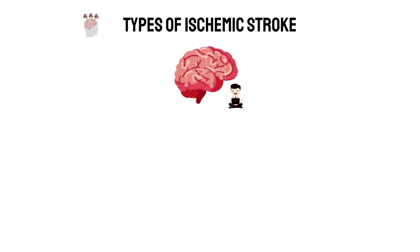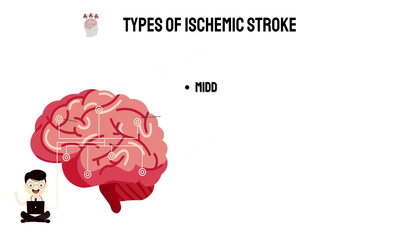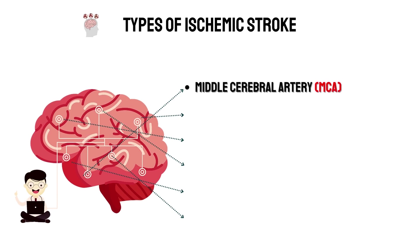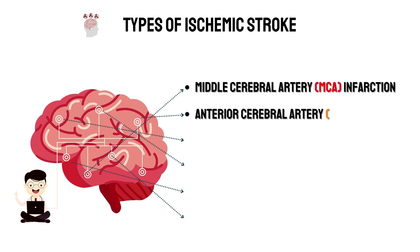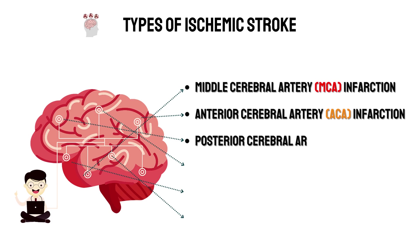By morphology, ischemic stroke is classified into six types: middle cerebral artery (MCA) infarction, anterior cerebral artery (ACA) infarction, and posterior cerebral artery (PCA) infarction.